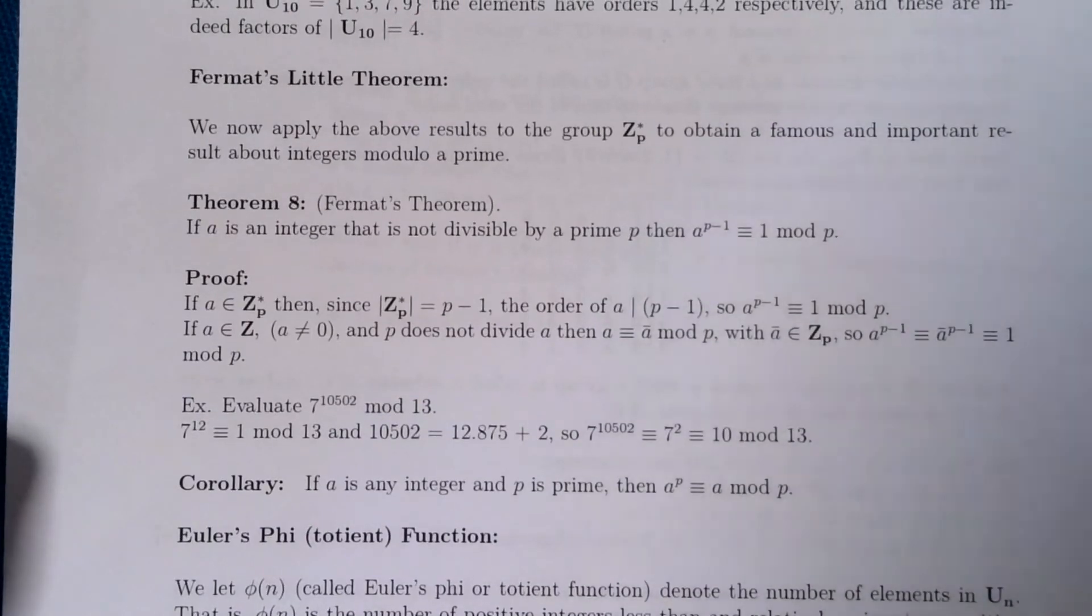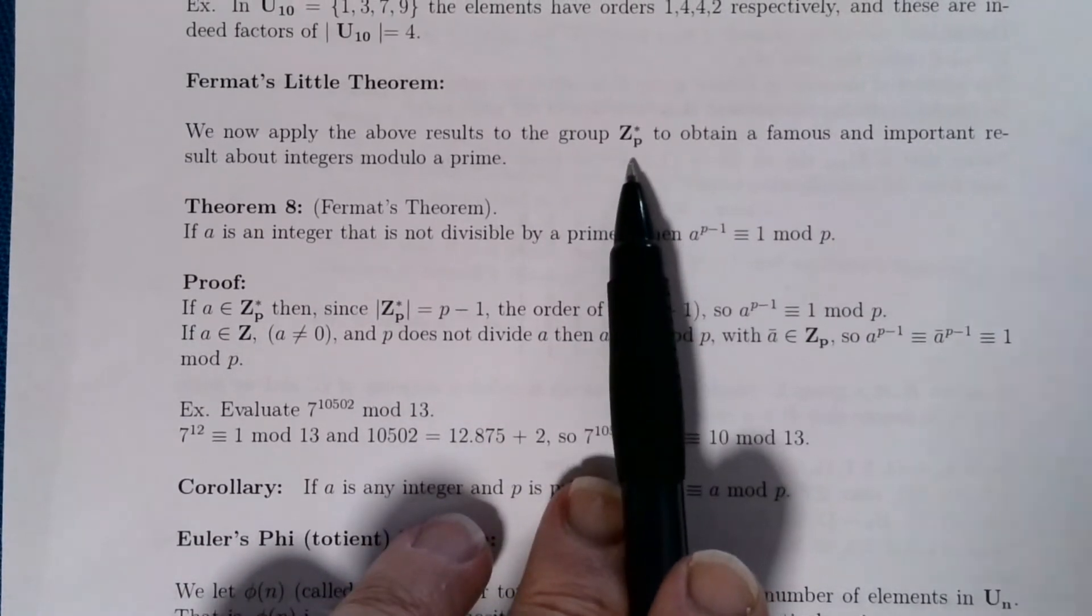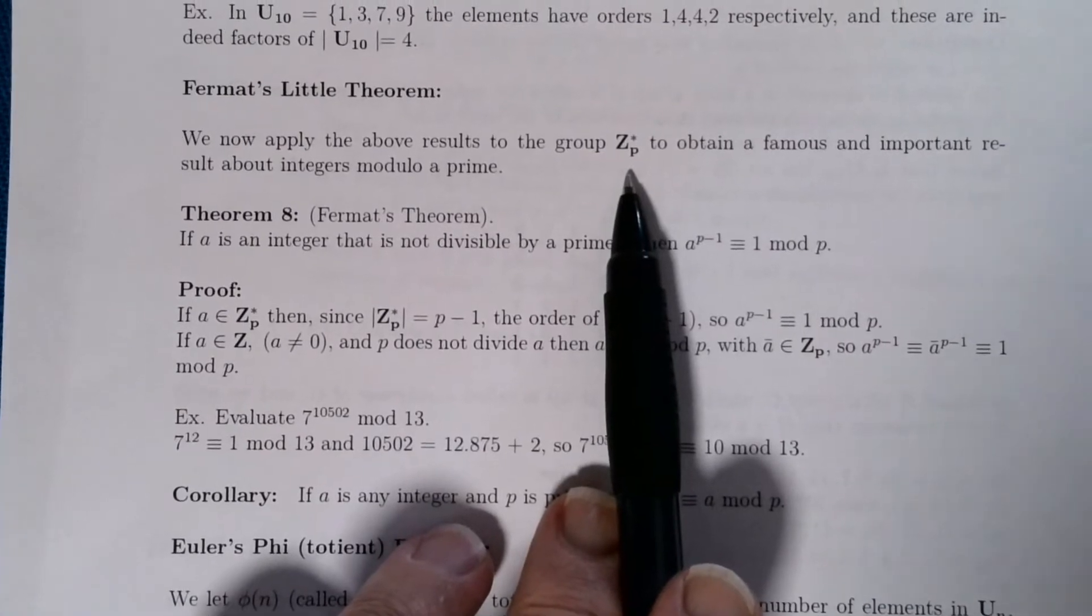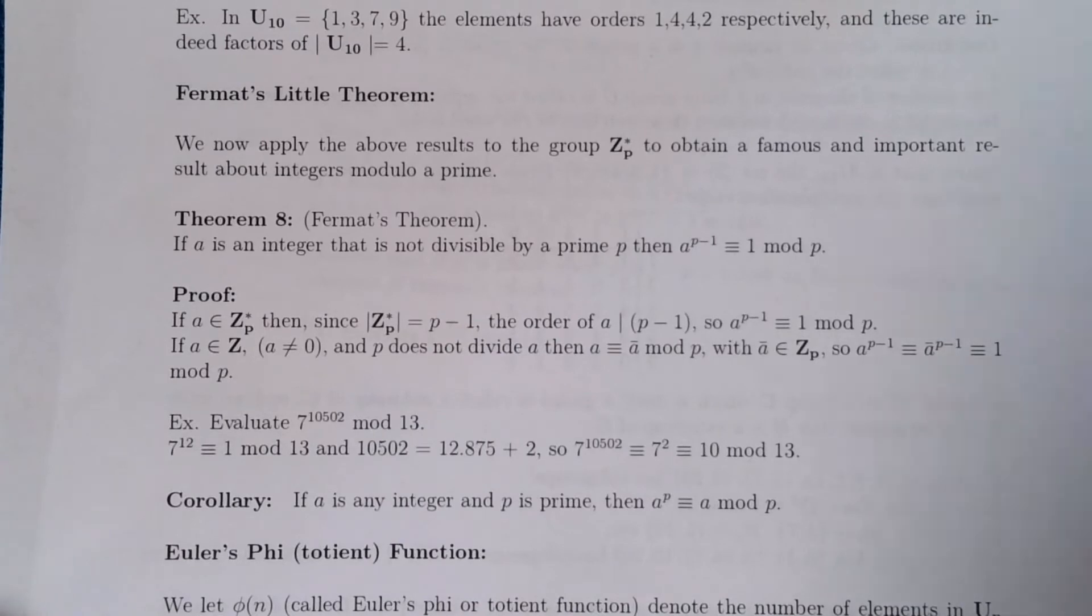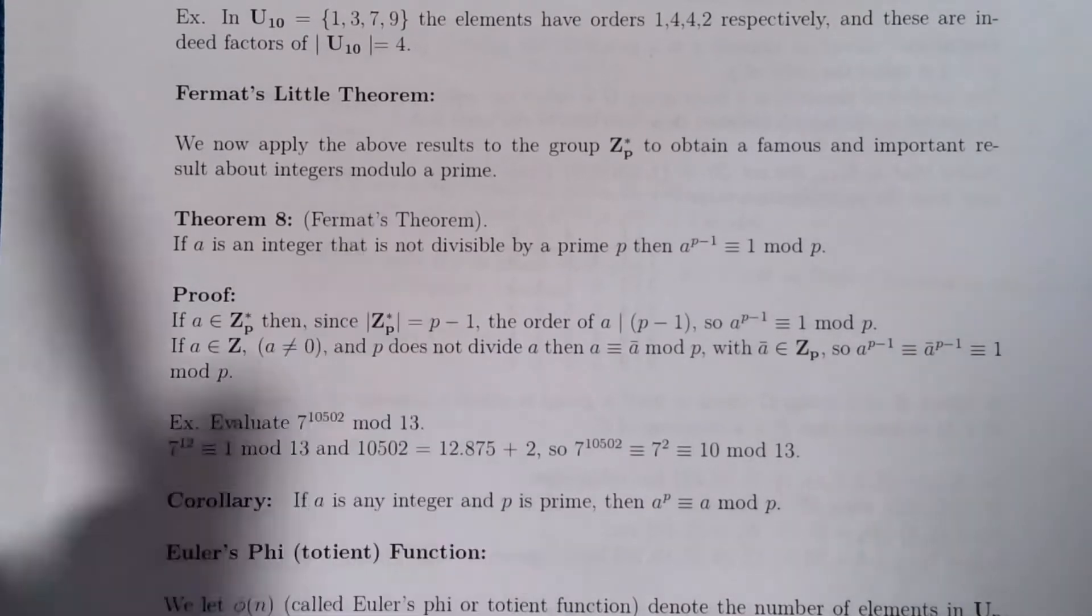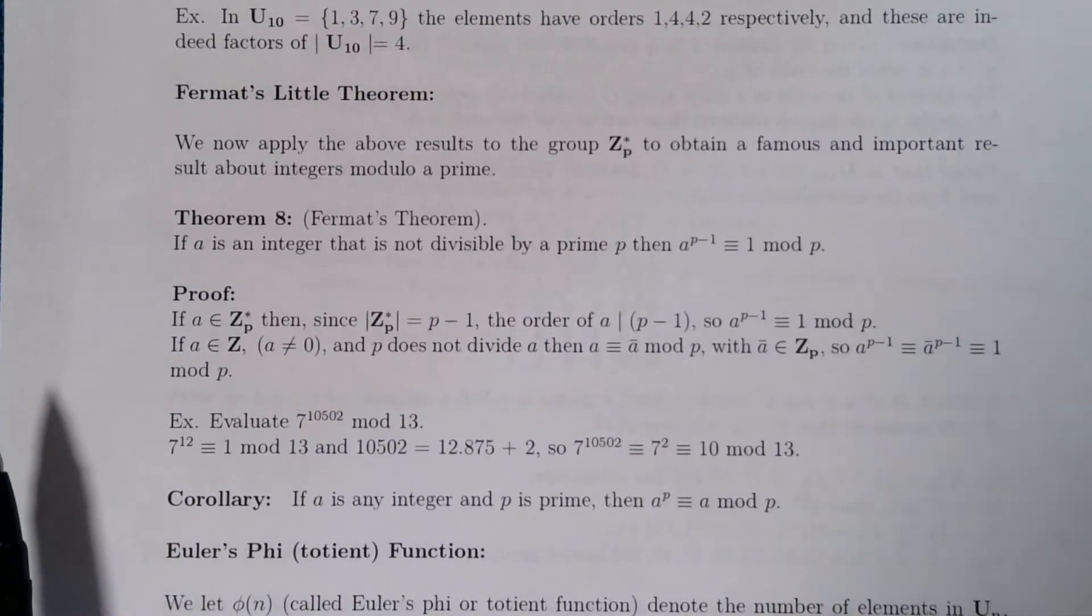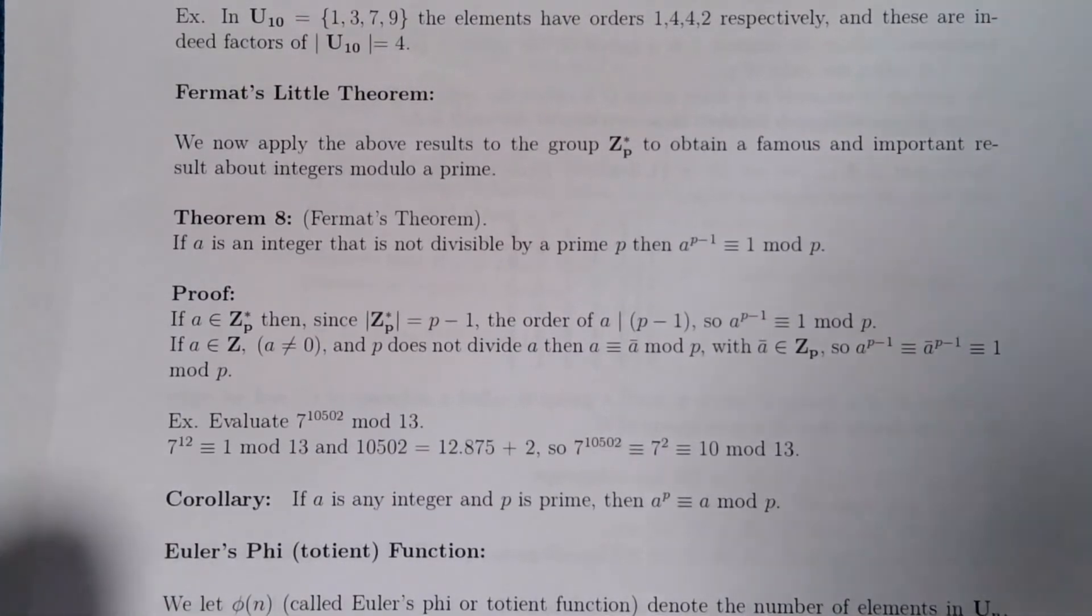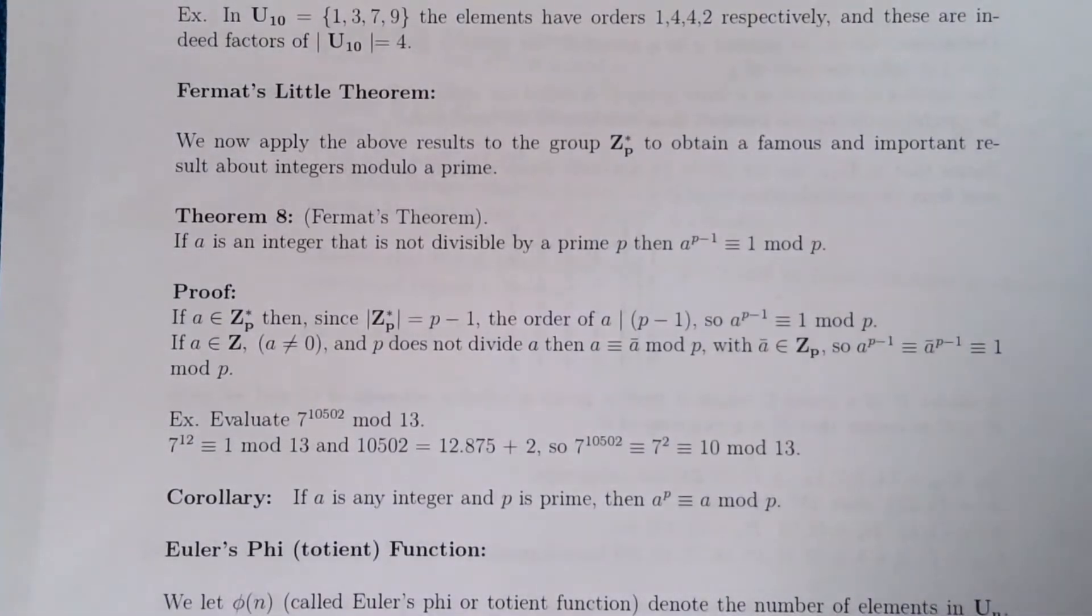We can now apply that, going back into number theory. We can apply that to the group Z_p star to obtain a famous and important theorem about integers modulo a prime, and this of course is Fermat's little theorem. It wasn't expressed quite this way by Fermat but it's certainly equivalent to it. Fermat would be quite amazed to see his theorem rewritten and reanalyzed in this form and to see how it could be motivated by using group theory.